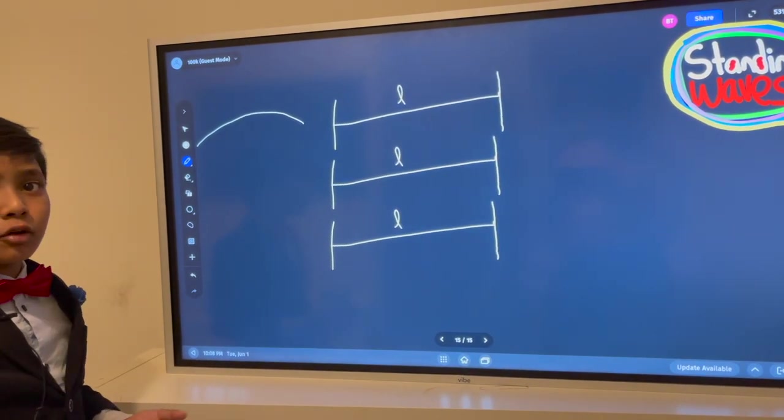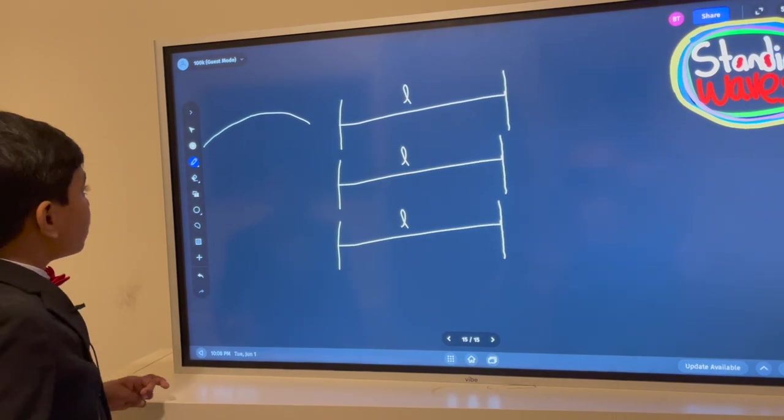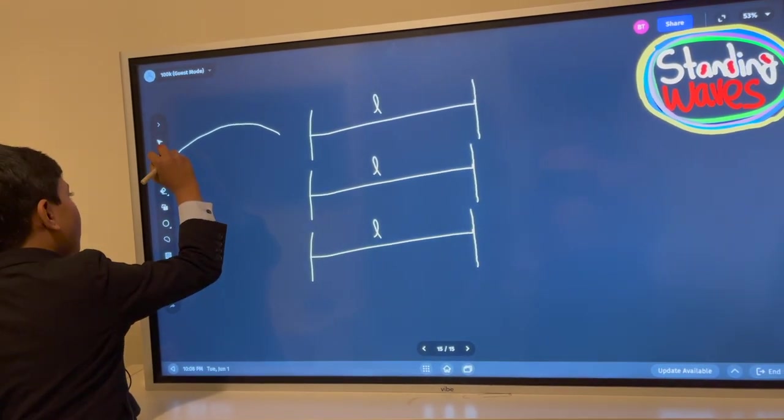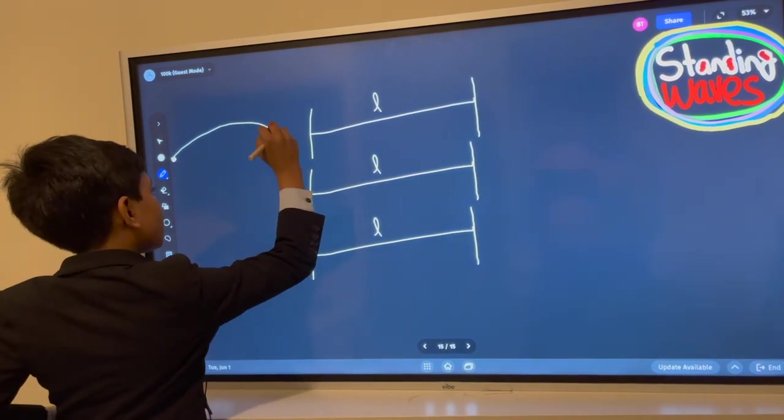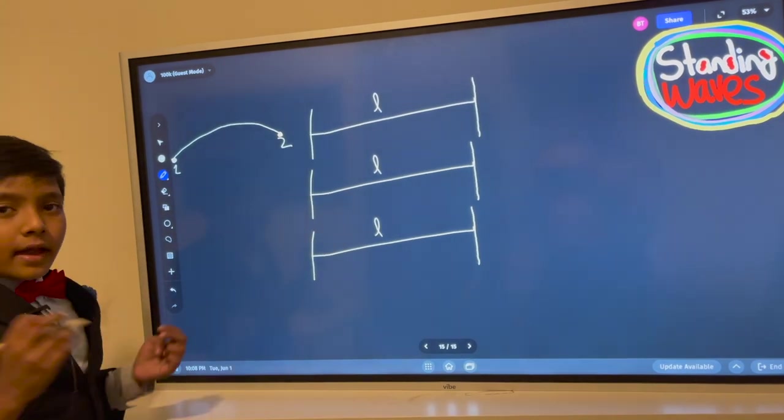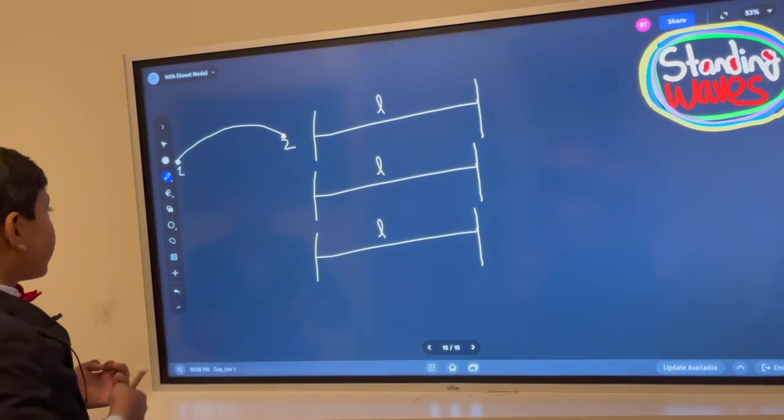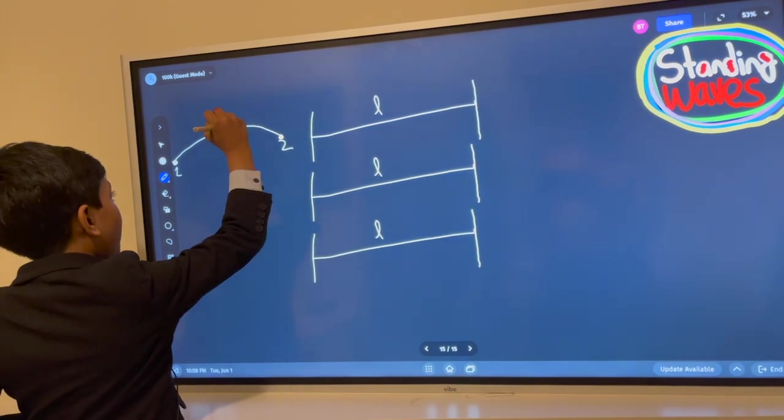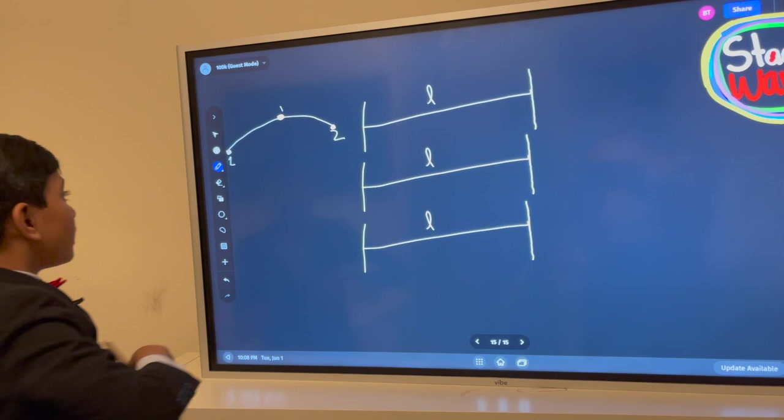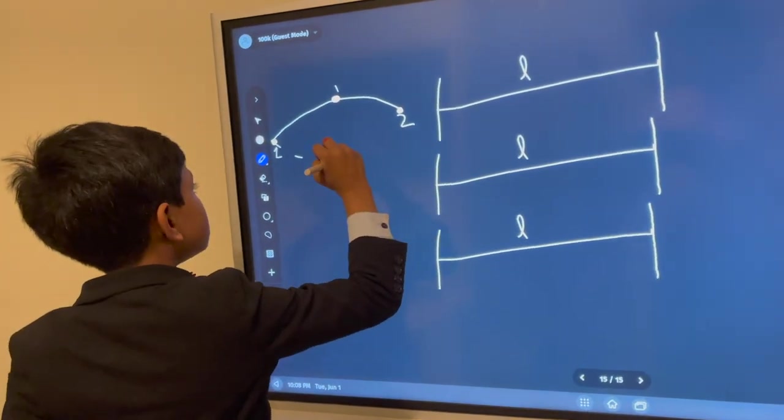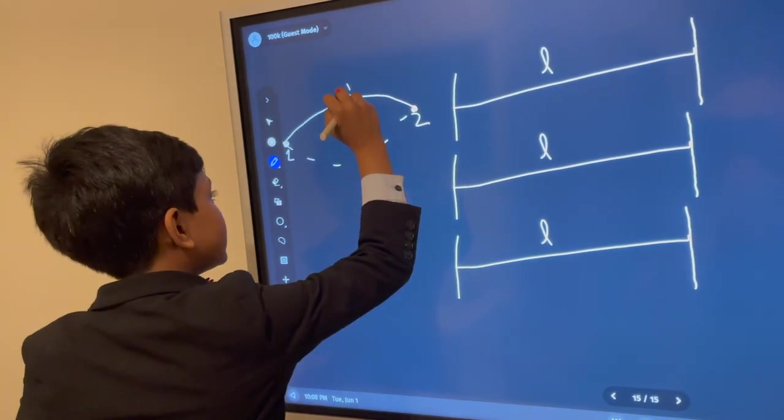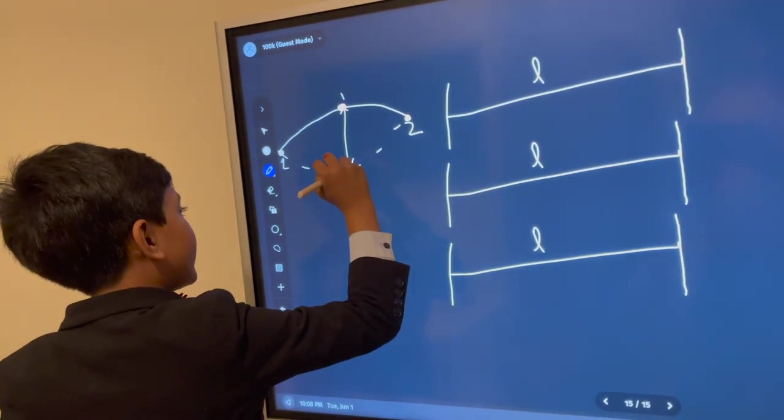Right, so where is our antinode, and where is our node? Well, our nodes are going to be here at the endpoints. So there are two nodes. And then there's only going to be one antinode. So how is it moving the most? Well, if we draw the other phase of our little string, then we can see it's at the widest point.